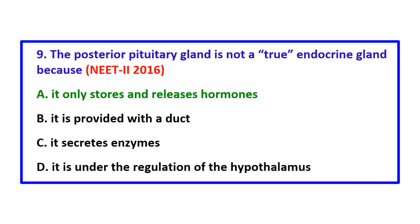Question: The posterior pituitary gland is not a true endocrine gland. Because — the correct answer is it only stores and releases hormones.